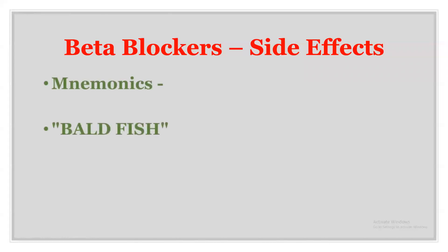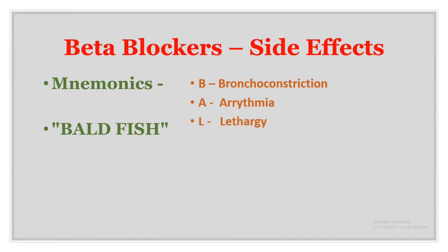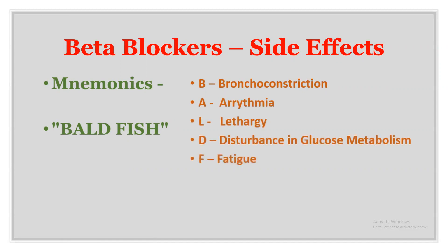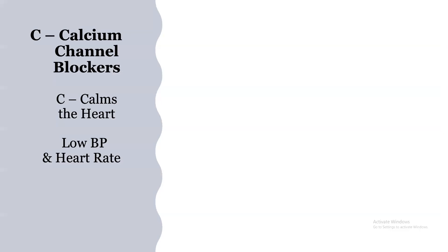Side effects of beta blockers can be remembered as BALD FISH: B for bronchoconstriction, A for arrhythmia, L for lethargy, D for disturbance in glucose metabolism, F for fatigue, I for insomnia, S for sexual dysfunction, H for hypotension.